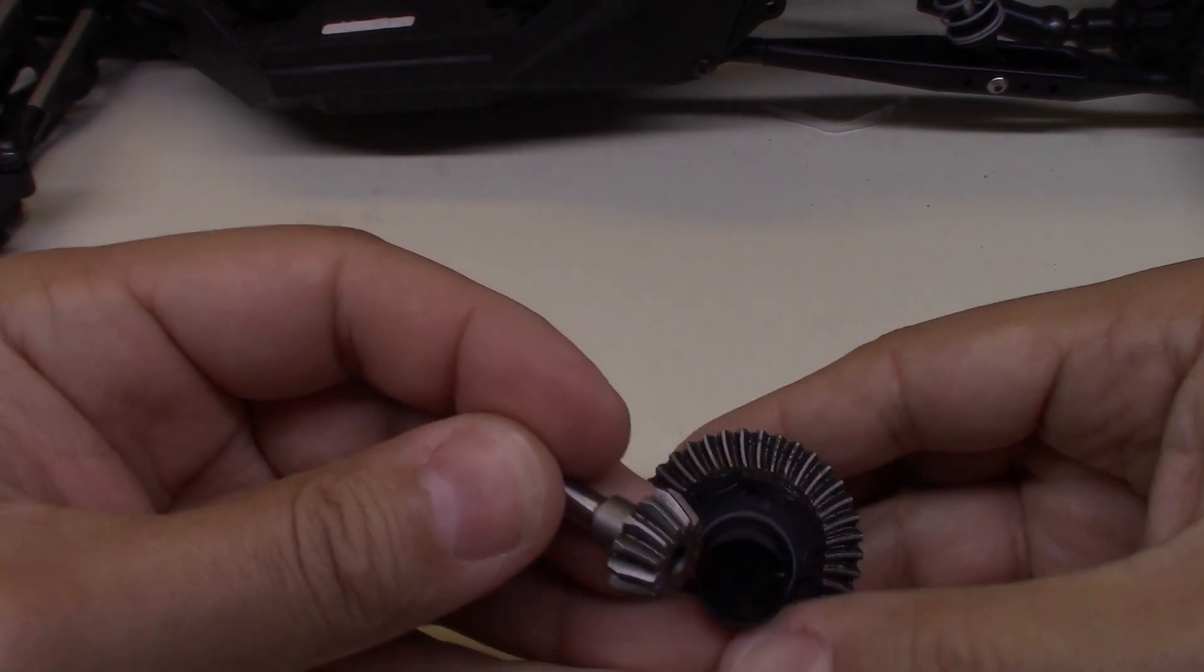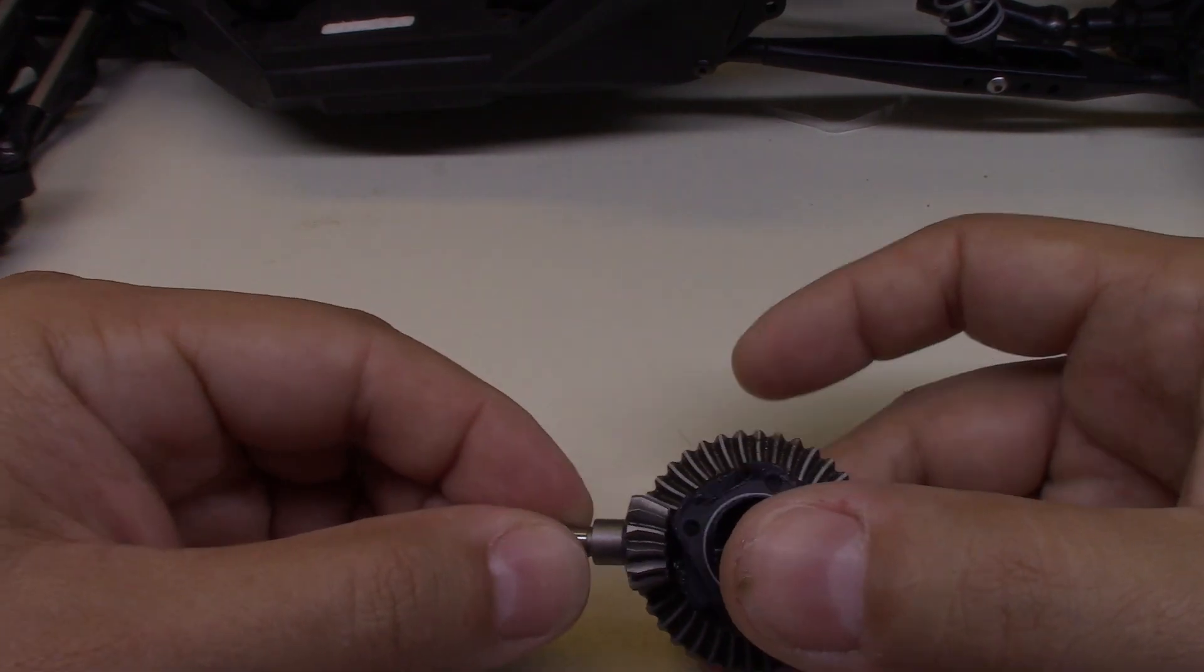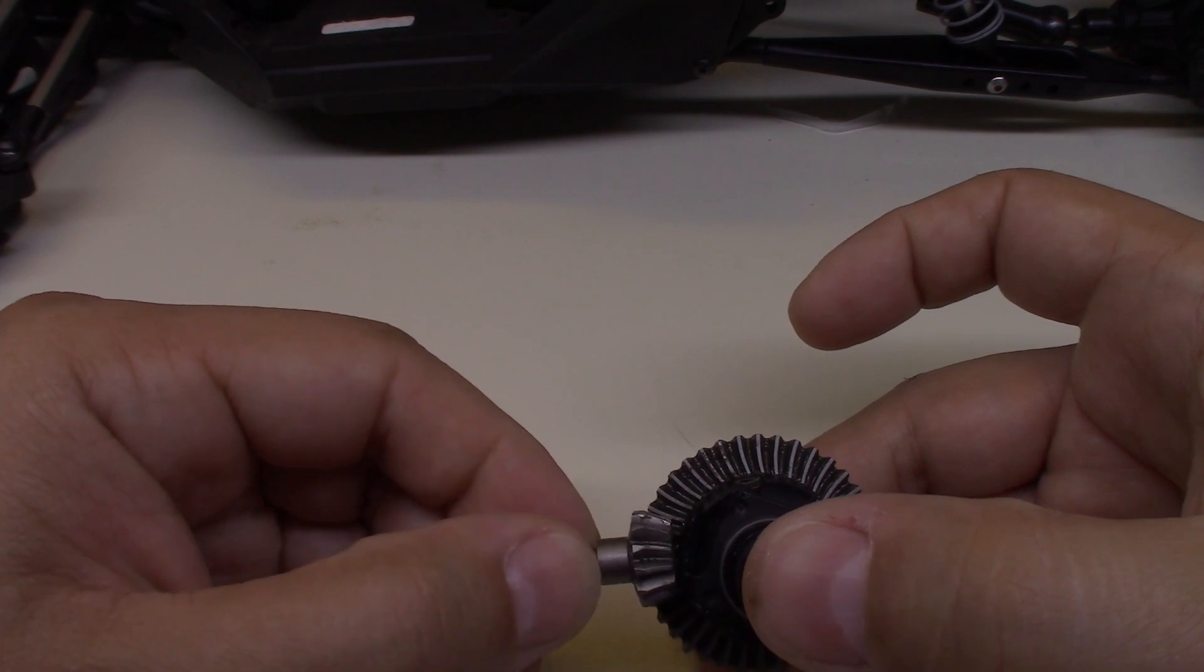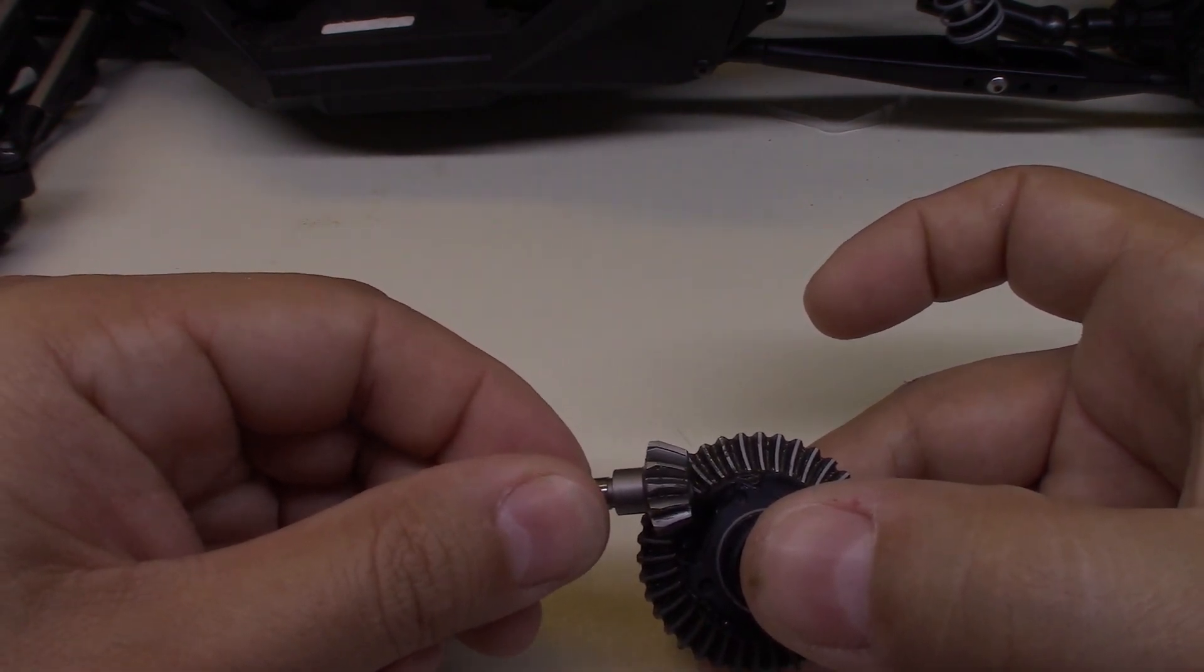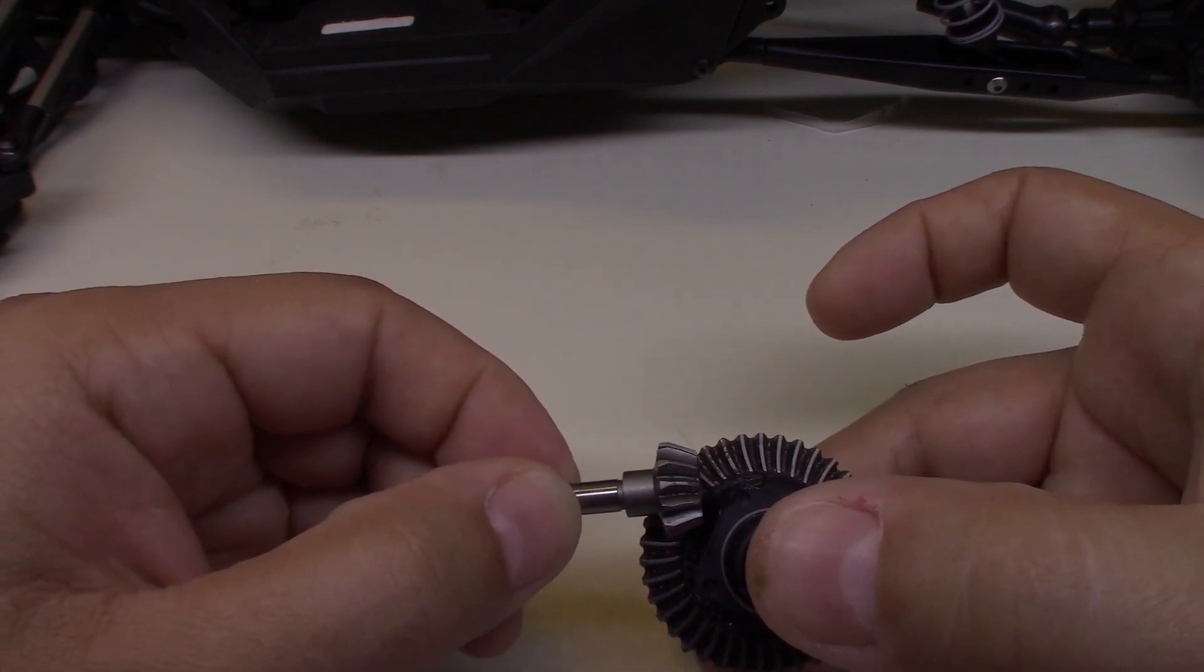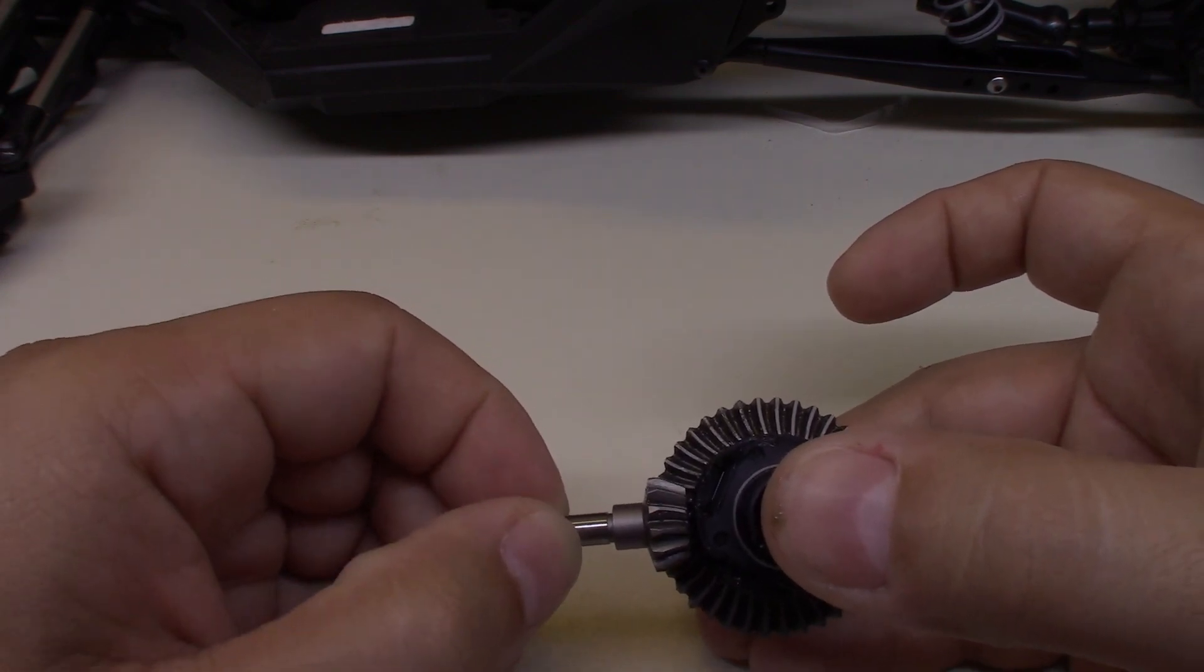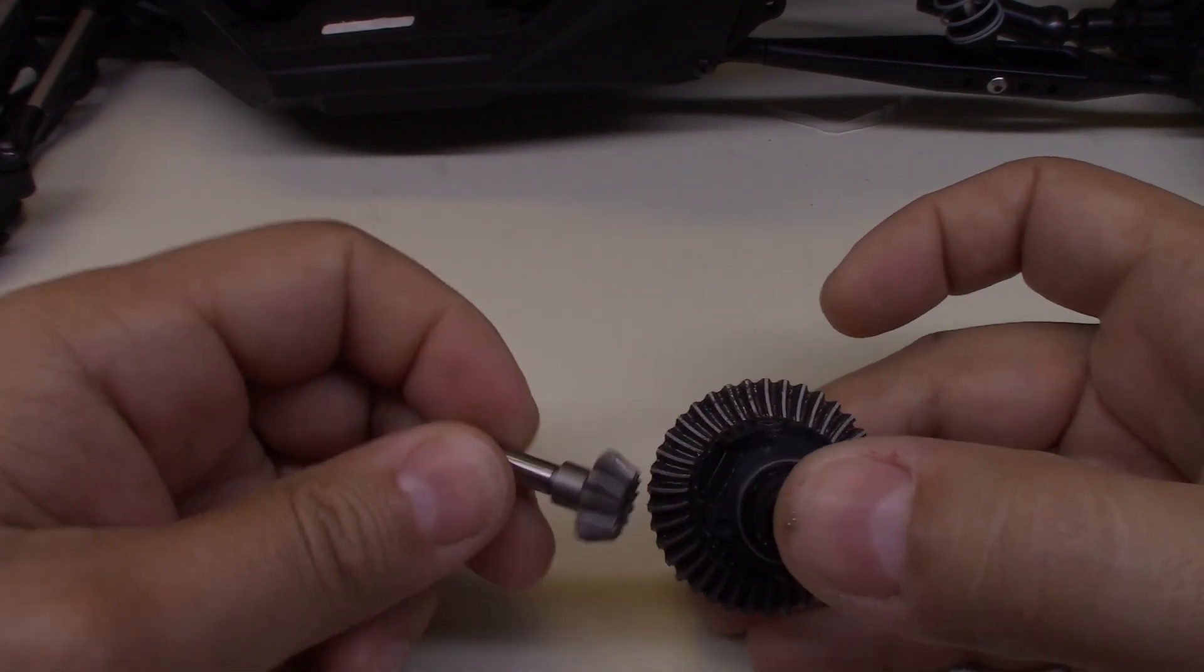It doesn't really make a lot of difference. I think the spiral bevel is just kind of a marketing scheme. It may make things a little bit stronger. It doesn't have the same offset pinion as a car axle does, so it doesn't have the advantage of that higher engagement. I'm kind of dubious as to exactly how much advantage there is to having the spiral bevel. They might be a little bit quieter.